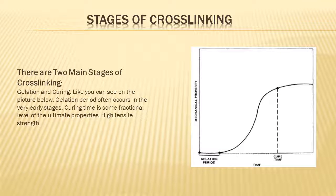You can see the picture on the right side. There are two main stages of cross-linking. The gelation period occurs at the beginning, and the cure time occurs almost at the end. Gelation always starts in the beginning at the early stages, and the curing time is some fractional level of ultimate properties.